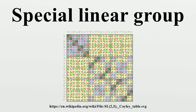Geometric interpretation: The special linear group SL can be characterized as the group of volume and orientation preserving linear transformations of Rⁿ. This corresponds to the interpretation of the determinant as measuring change in volume and orientation.